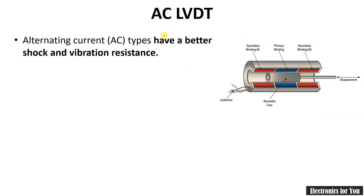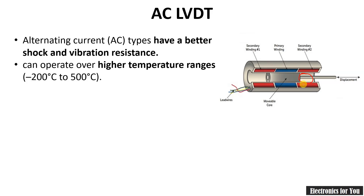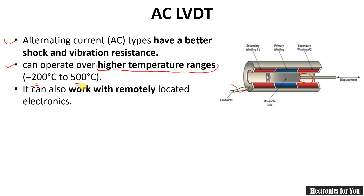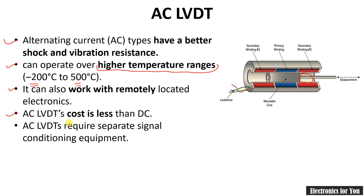Now let's see AC LVDT — the type based on output power. AC LVDT has better shock and vibration resistance. No electronic circuit is assembled on the LVDT itself for signal processing — such an LVDT is known as AC LVDT. It can be used for higher temperature ranges, from minus 200°C to 500°C, and can work with remotely located electronics. AC LVDT costs less than DC LVDT, but requires separate signal conditioning equipment placed outside the LVDT, which is its key limitation.